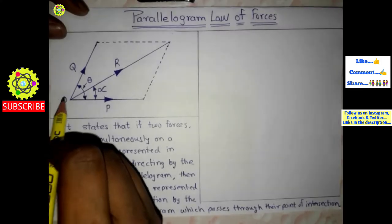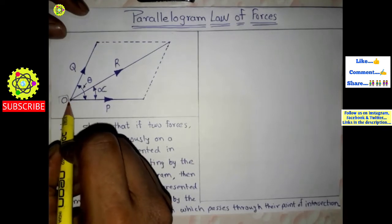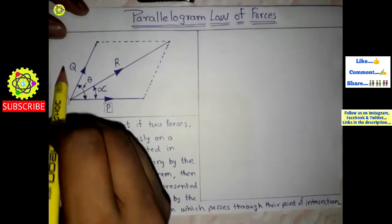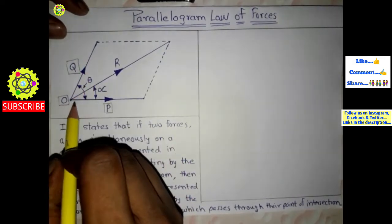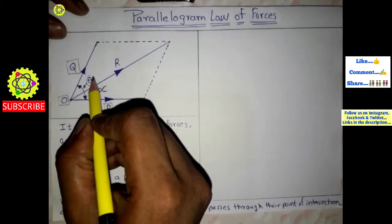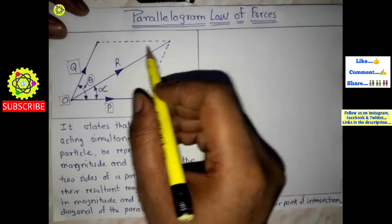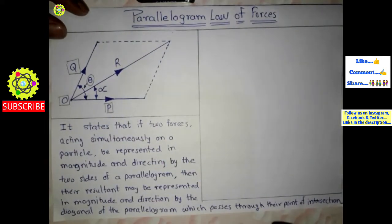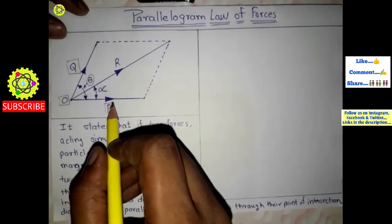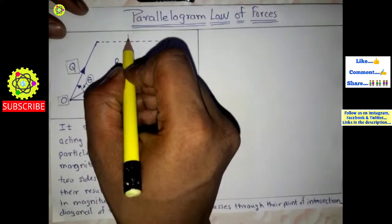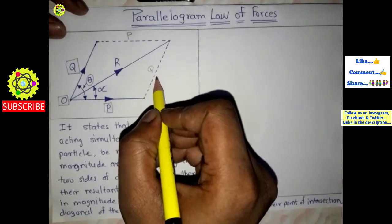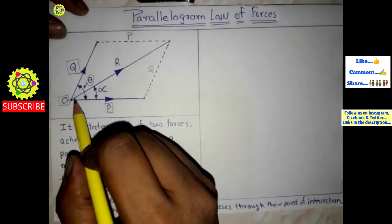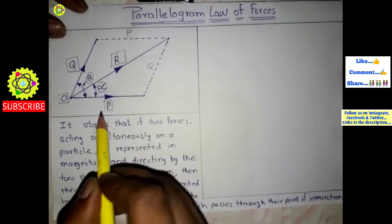Suppose this is a particle represented by letter O. On this particle, two forces are applied: force P and force Q. The angle between these two forces P and Q, let's assume, is theta. We draw imaginary dotted lines which form a parallelogram. This parallelogram has opposite sides equal — this side equals P and this side equals Q. The diagonal of the parallelogram shows the resultant R of forces P and Q, and this resultant makes angle alpha with force P.